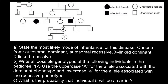The first question is to state the most likely mode of inheritance of this disease, choosing from autosomal dominant, autosomal recessive, X-linked dominant, and X-linked recessive. We can cross out autosomal dominant right away, because for autosomal dominant, in order for this person to be affected, one of his parents would also have to carry this dominant allele. We see that none of the parents are affected, so this is not autosomal dominant.